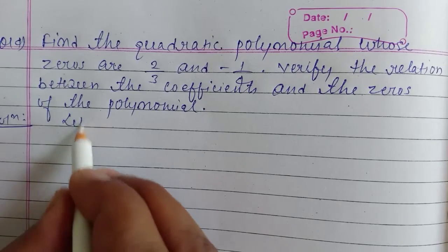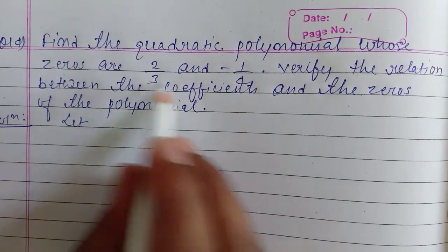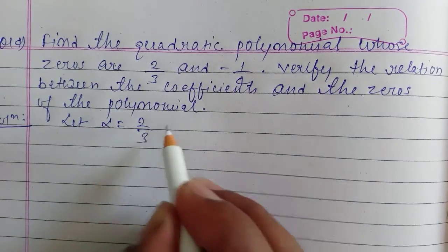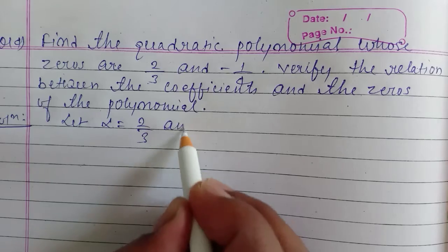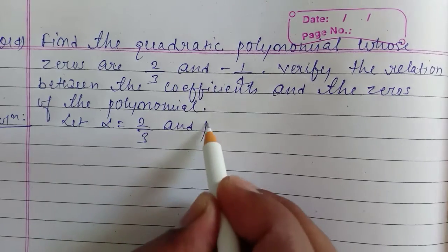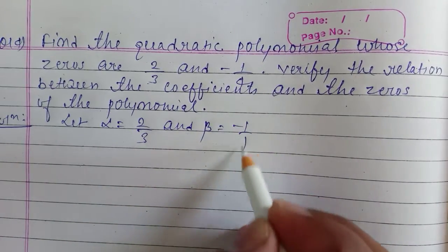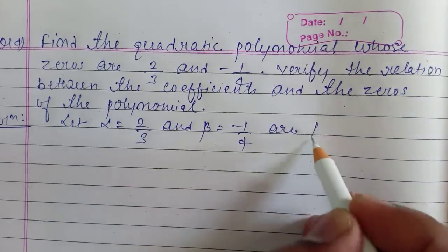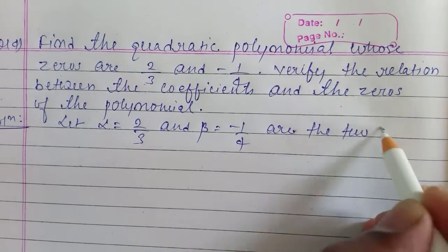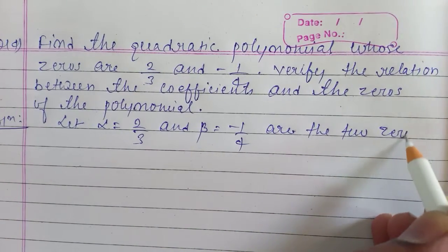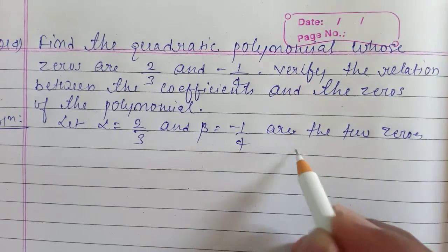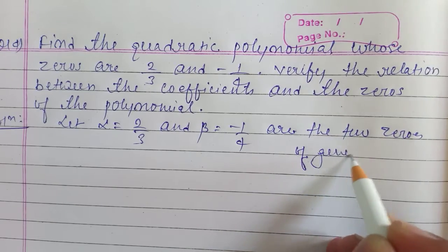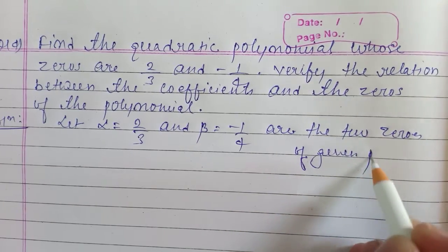That means we have two zeros given to us. First, alpha is 2/3 and beta is minus 1/4, which are the two zeros of the given polynomial.